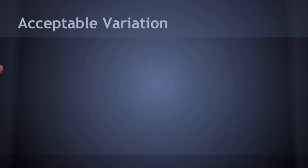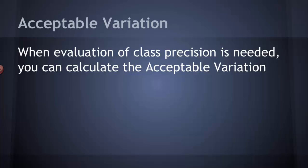The other thing that we want to be able to do is to talk a little bit about how well the class is doing. How precise the class is. How close are the class's measurements to each other? And in order to do that, we're going to use something called the acceptable variation.